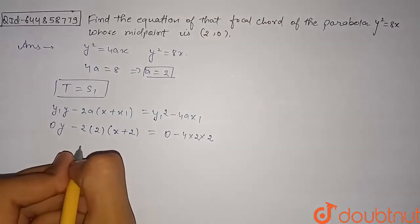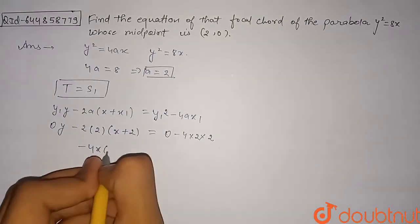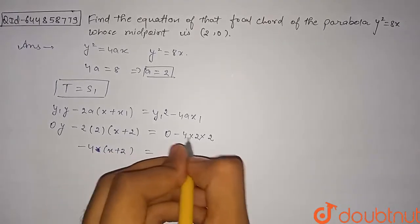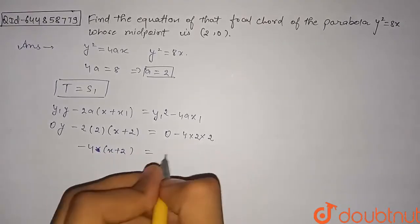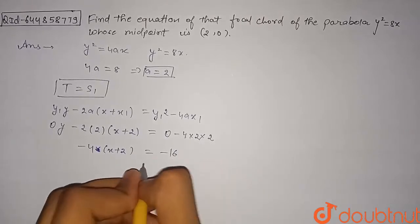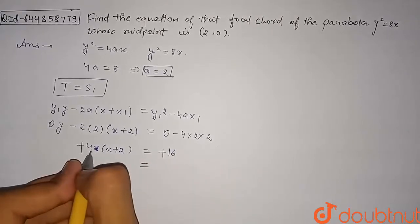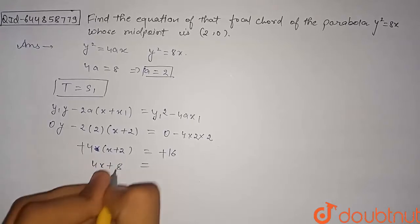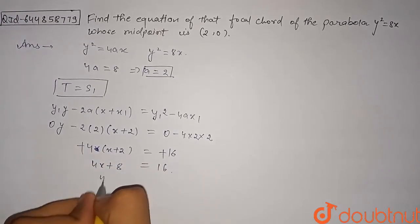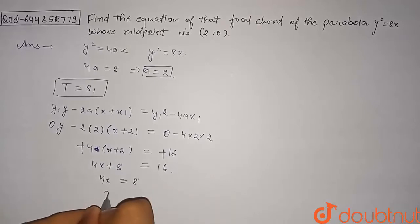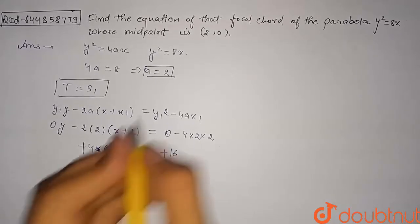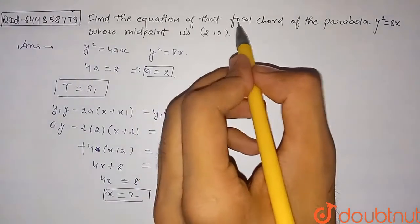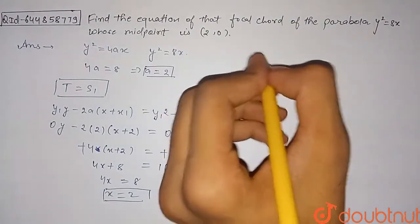This simplifies to −4(x + 2) = −16. Cancelling the negative sign and expanding, we get 4x + 8 = 16, so 4x = 8, giving x = 2. This is our chord with given midpoint (2, 0).